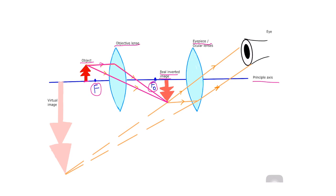This real inverted image then acts as an object for the ocular lens, and the ocular lens further magnifies it. Again, the light ray parallel to the principal axis will reflect and change direction, while the light ray not parallel to the principal axis passes directly through the center of the ocular lens. Looking back along these two rays — shown by dotted lines — their meeting point is the place where the virtual image forms, and this virtual image is received by the observer's eye. This is how, in the compound microscope, the image is magnified by both the objective lens and the ocular lens.